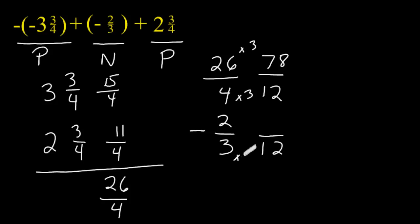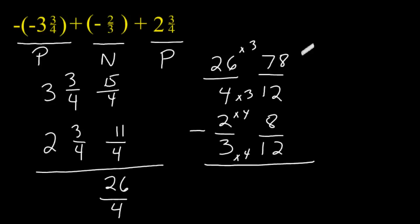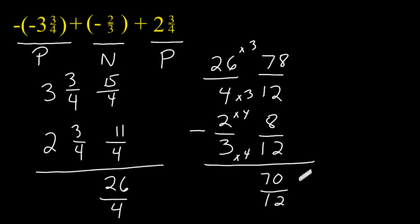And for this denominator, it increased by a factor of 4, so we have to increase this numerator by a factor of 4 as well, which would give us a numerator of 8. Because the signs are different, we have to find the difference between the two values. So let's take 78 and subtract 8 from it — 78 minus 8 gives us 70. The denominator stays the same. Both of these numbers are even, so we can reduce by a factor of 2: cutting 70 in half and 12 in half gives us 35 over 6.